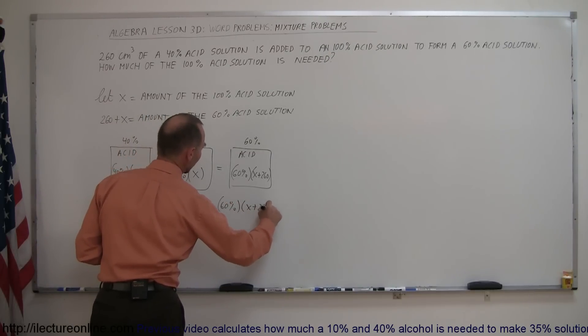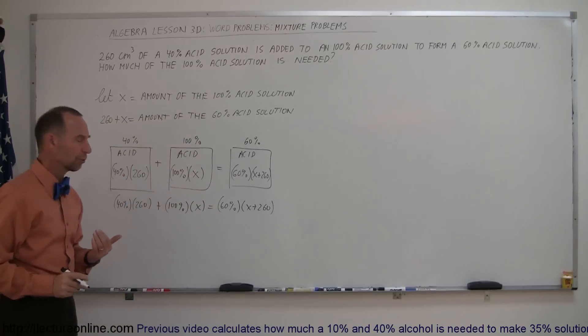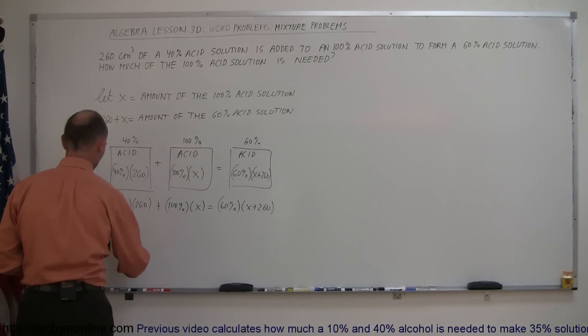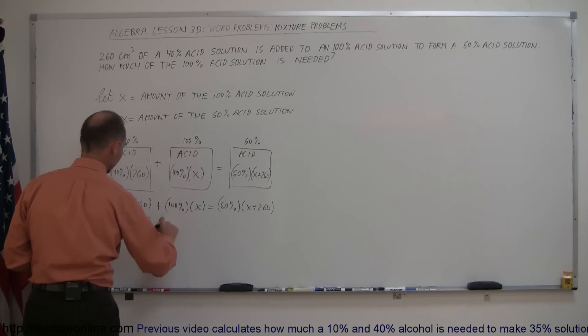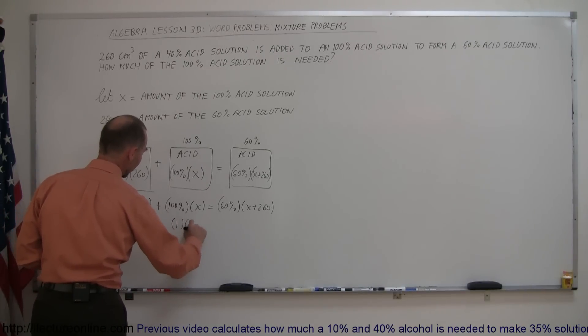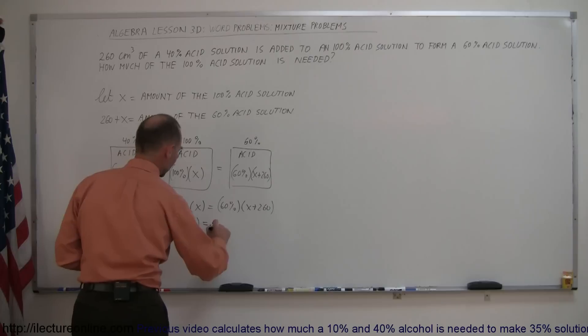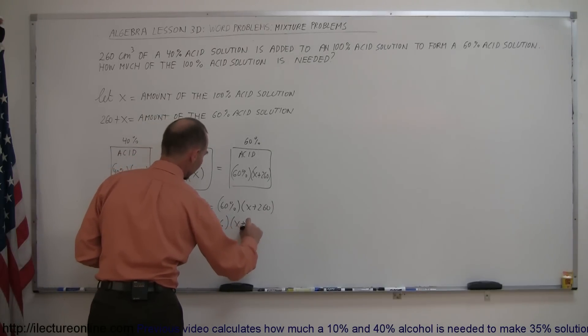And then, of course, to solve a problem like this, we want to convert from percentage to decimals. So 40% is 0.4 times 260, plus 100%, that's simply 1, times X equals 60%, which is 0.6 times X plus 260.